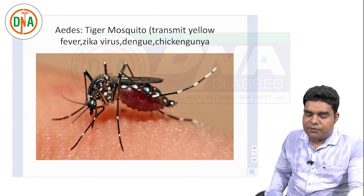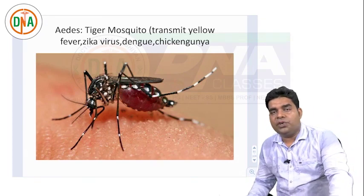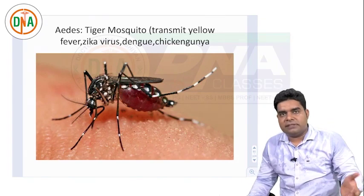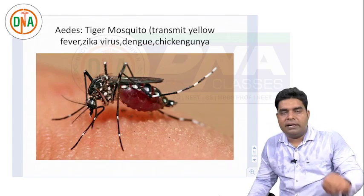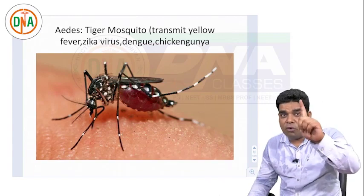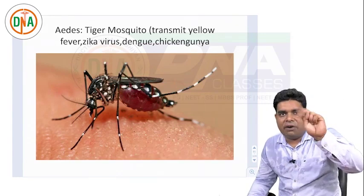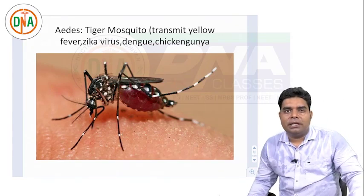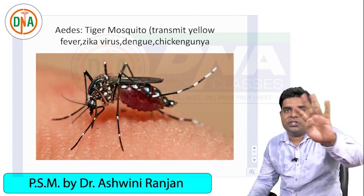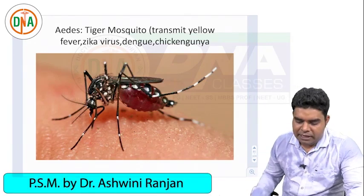Aedes transmits four main diseases: the first is yellow fever, the second is Zika virus, the third is dengue, and the fourth is chikungunya.